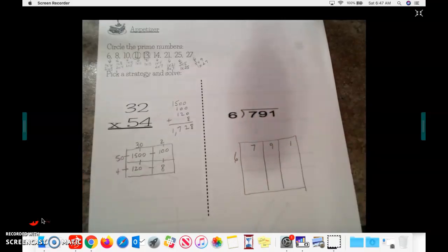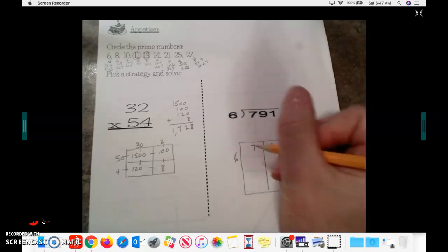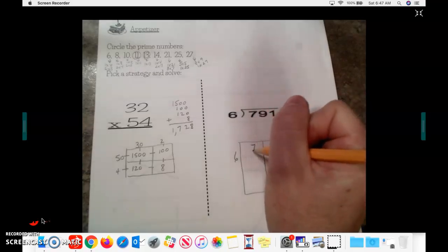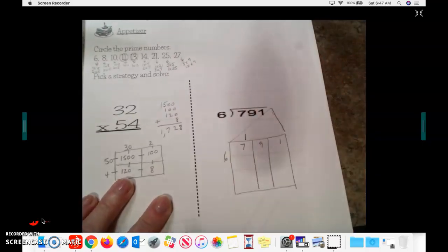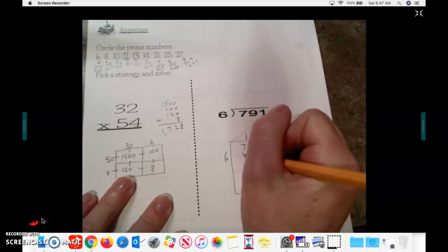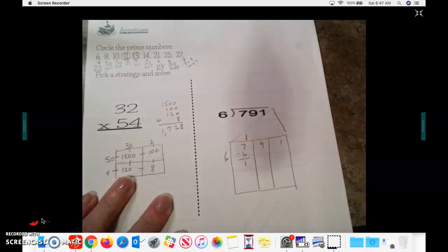Using my multiplication chart, 6 goes into 7. I know that 7 is bigger than 6, so it will go into it. But I know that I can multiply 6 times 1, that gives me 6. So remember, my answers go in the attic. So this is going to be 1. 6 times 1 is 6. Subtract. It's 1.